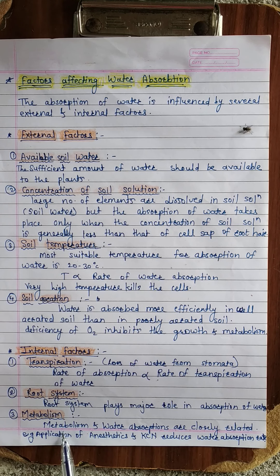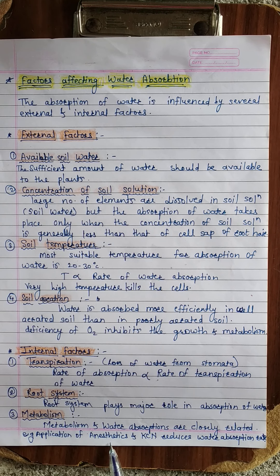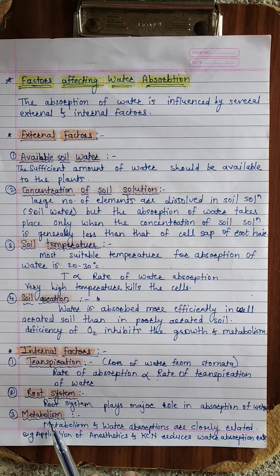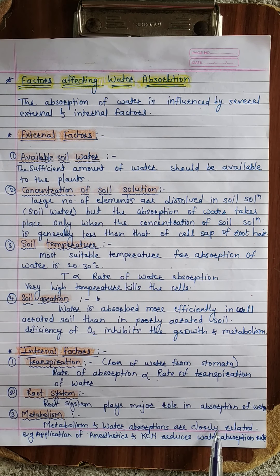The third internal factor is metabolism. Metabolism and water absorption are closely related. Application of anesthetics and potassium cyanide reduces the water absorption rate, as these inhibit the metabolism of the plant. If metabolism is inhibited, then water absorption is also inhibited. So, metabolism and water absorption are closely related.